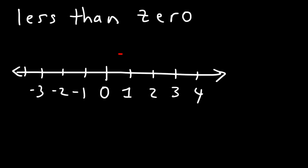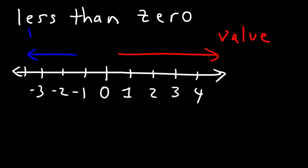As you travel to the right, the value of the number increases. As you go towards the left, the value of the number decreases. And so negative numbers have a lower value than a positive number.